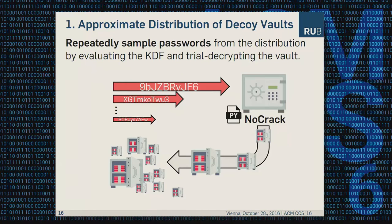In more detail: in the first step we repeatedly sample passwords using random strings, and evaluate the KDF and trial-decrypt the vault. Since evaluating the KDF and trial decrypting is computationally expensive, we can skip the password-based encryption part and simply generate a random bit string and feed it into the Natural Language Encoder. As a result, we get a lot of wrong decoy vaults and by this we sample from the distribution.